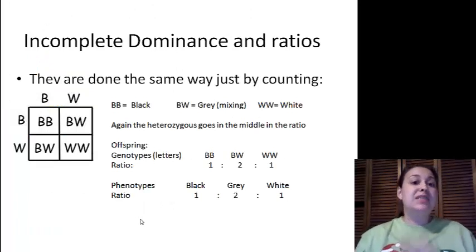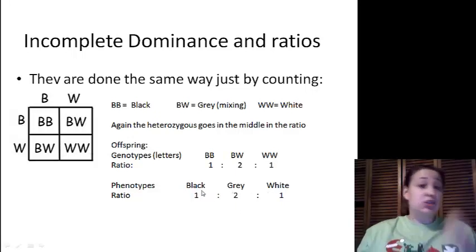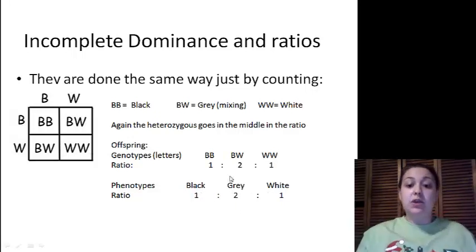Now when we move into incomplete dominance, again it's the same thing. We just count. But this time our phenotype has a third option. Our phenotype is not just dominant or recessive. We also have a middle or our heterozygous phenotype. We've got BB equals black, BW equals gray which is mixing which makes incomplete, and then we have WW which is white.